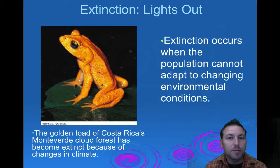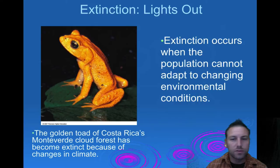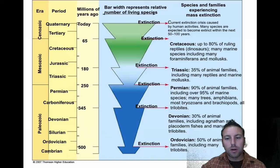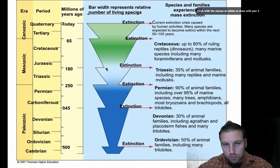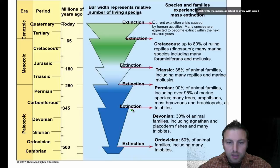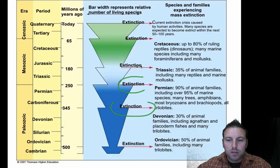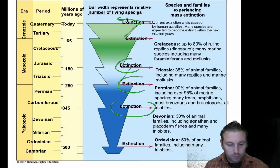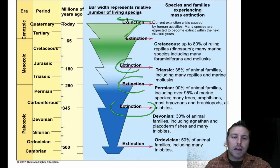Extinction occurs when a population cannot adapt to changing environmental conditions. We're seeing this with toads and frogs — indicator species extremely sensitive to environmental changes — that just can't change quickly enough. Looking at a chart of mass extinctions through time, we see events like the Ordovician where 50% of many animal families died off, followed by species numbers building back up, then another extinction, and so on. Due to human activity, scientists are starting to see trends suggesting we may be heading toward another mass extinction event.